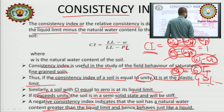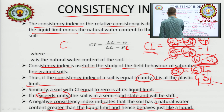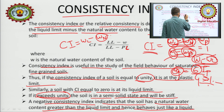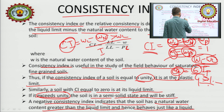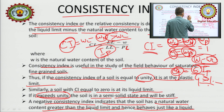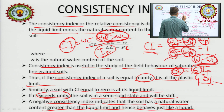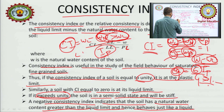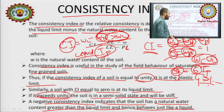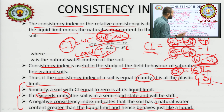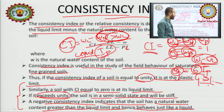When CI is negative, it means WN is greater than WL, so the numerator becomes negative. IP is a fixed parameter, so only WN varies. When WN exceeds WL, the soil is in a liquid condition. This consistency index helps us identify which state the soil is in.